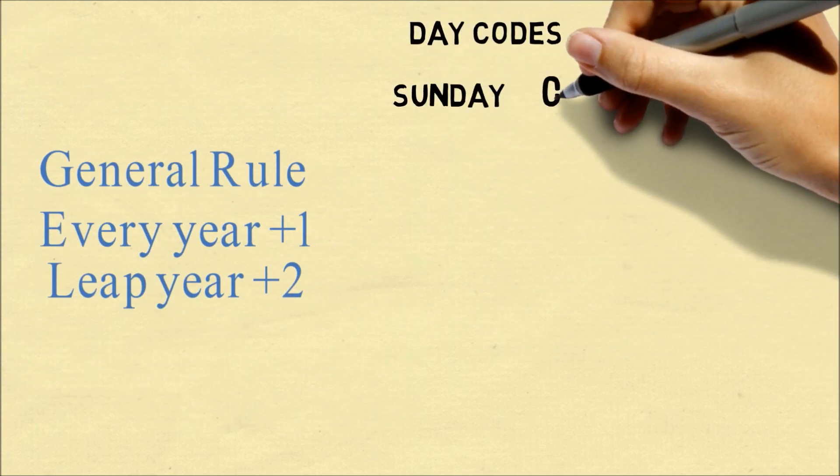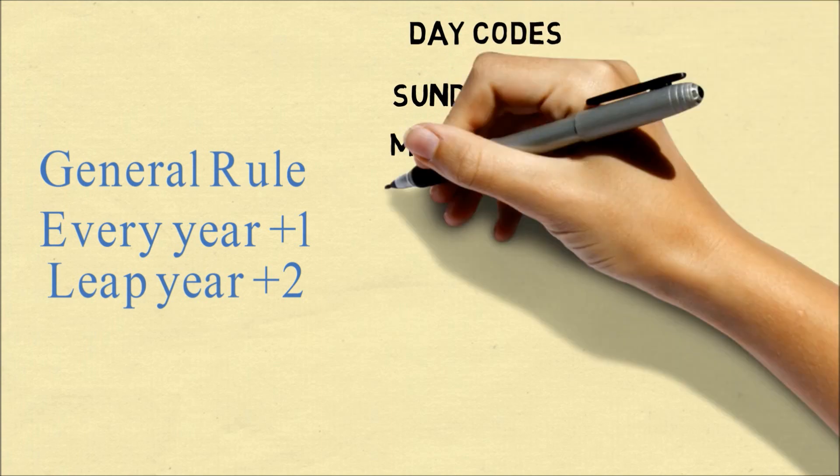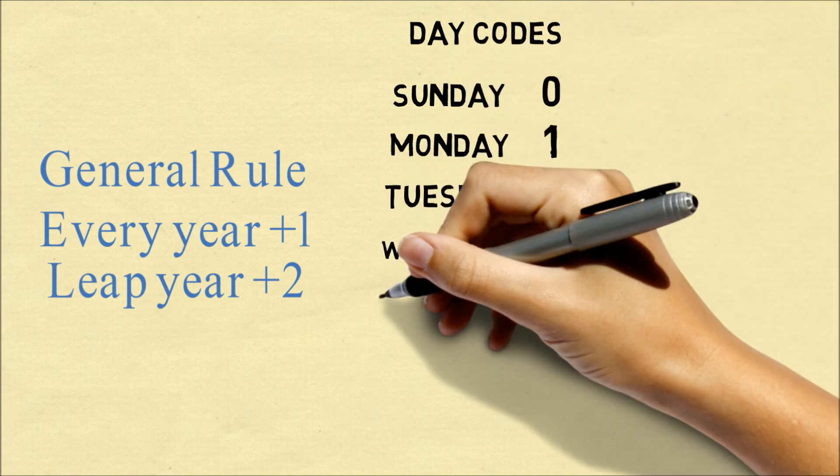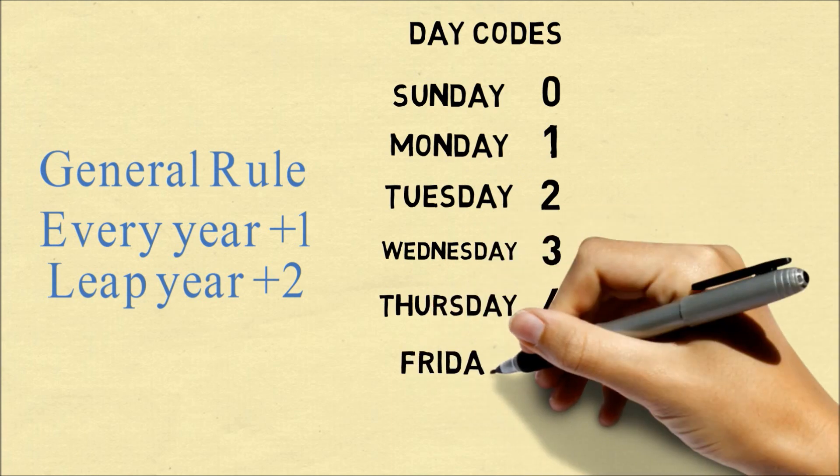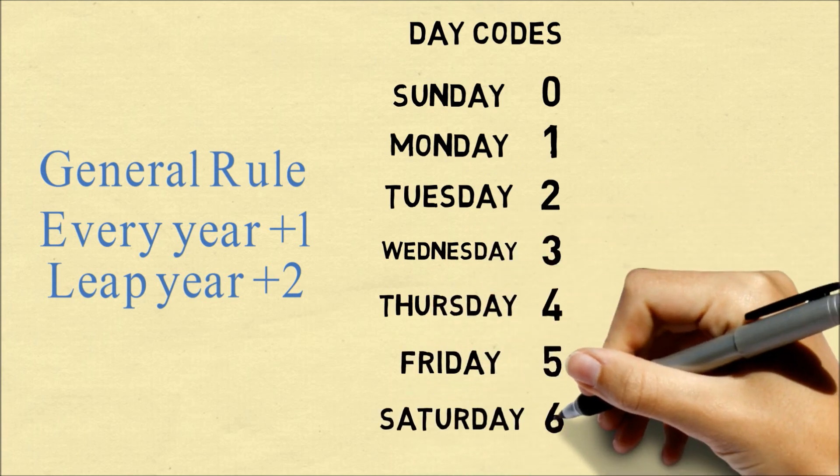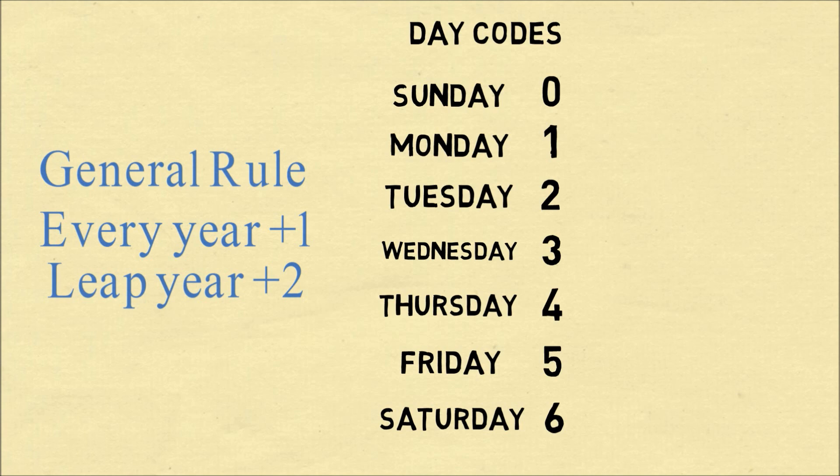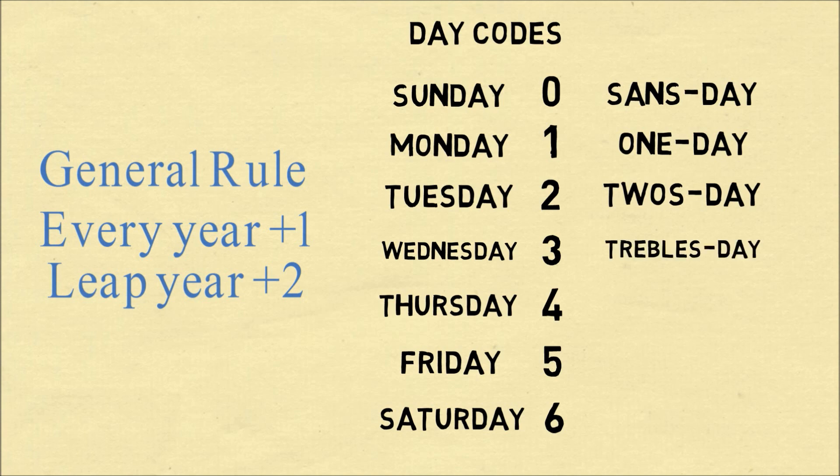So we want to come up with a mathematical formula to calculate the day the New Year starts. A preliminary is we're going to make numerical codes for each of the days, Sunday being a zero, and Saturday being a six. There's some mnemonics you can use to remember this, like Sunday is sans day, Monday is one day, Tuesday is twos day, Wednesday is trebles day, Thursday is fours day, Friday is five day, and Saturday is six a day.